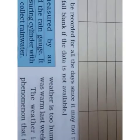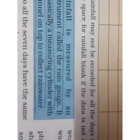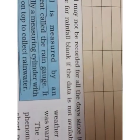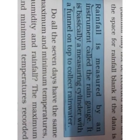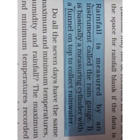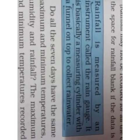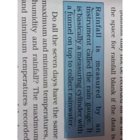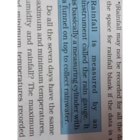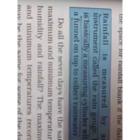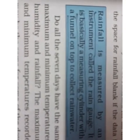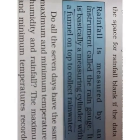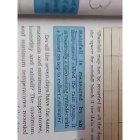Rainfall may not be recorded for all the days since it may not rain every day — leave the rainfall column blank if data is not available. Now underline all the blue boxes because the information in the blue boxes is very important. Rainfall is measured by an instrument called the rain gauge. It is basically a measuring cylinder with a funnel on the top to collect the rainwater, so that we can know how much millimetres of rain has occurred in an area — the quantity of rainfall.